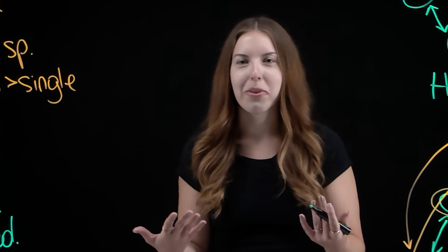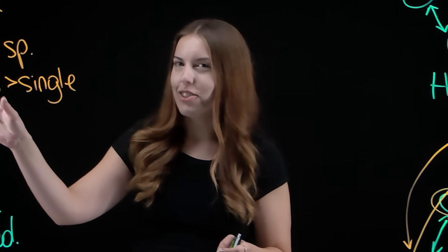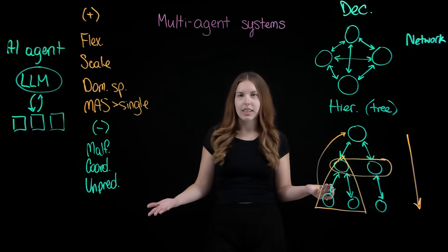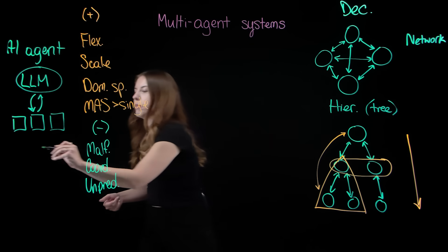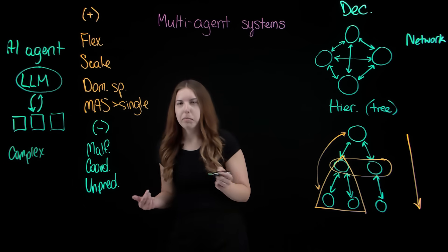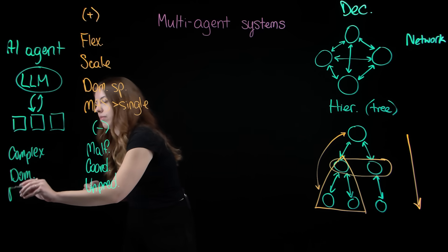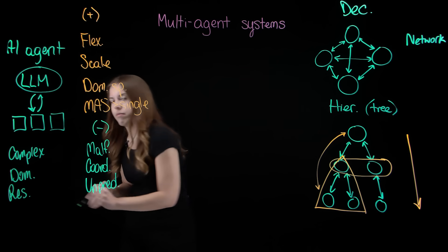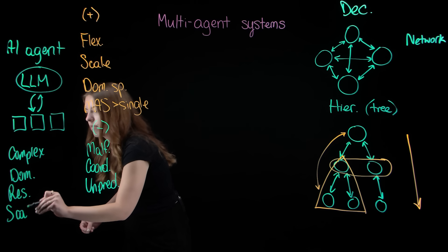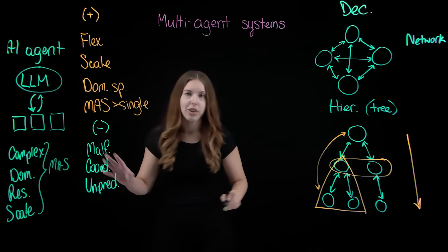All right, now if we want to avoid having too many cooks in the kitchen, when is it best to stick to a single-agent system versus a multi-agent system? Well, it depends on the task and our objectives, right? If the problem is complex, and perhaps it spans various domains, maybe it has limited resources, or it needs to scale across changing environments. This is exactly when a multi-agent system truly shines.